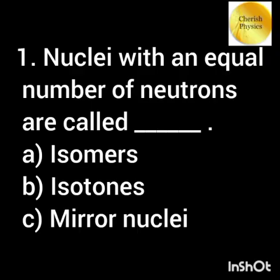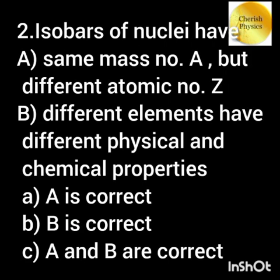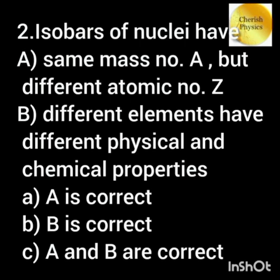Nuclei with equal number of neutrons are called isotones. Isobars of nuclei have Option A: same mass number but different atomic number.